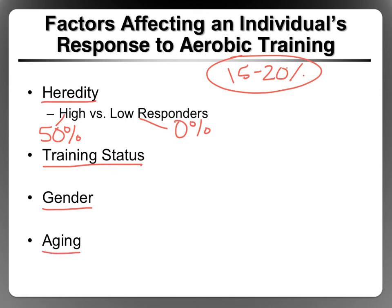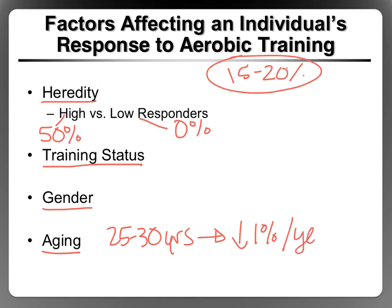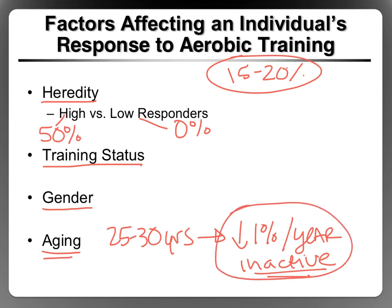With aging, our VO2max decreases. After about 25 to 30 years of age, if you remain inactive, your VO2max is going to decrease about 1% per year. You're never going to completely stop the decrease in VO2max that occurs with aging, but you can significantly reduce it if you remain active — and that's the good news.